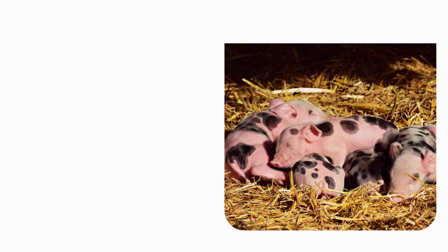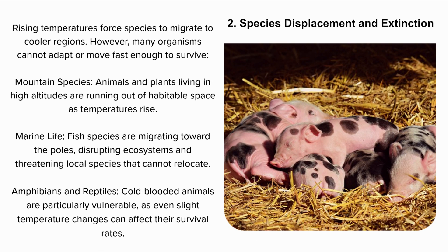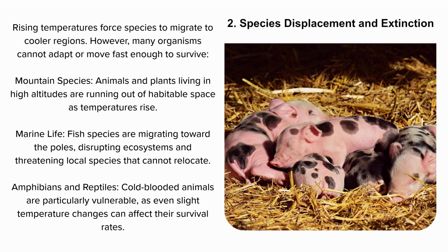2. Species displacement and extinction. Rising temperatures force species to migrate to cooler regions. However, many organisms cannot adapt or move fast enough to survive. Mountain species: animals and plants living in high altitudes are running out of habitable space as temperatures rise. Marine life: fish species are migrating toward the poles, disrupting ecosystems and threatening local species that cannot relocate. Amphibians and reptiles: cold-blooded animals are particularly vulnerable, as even slight temperature changes can affect their survival rates.